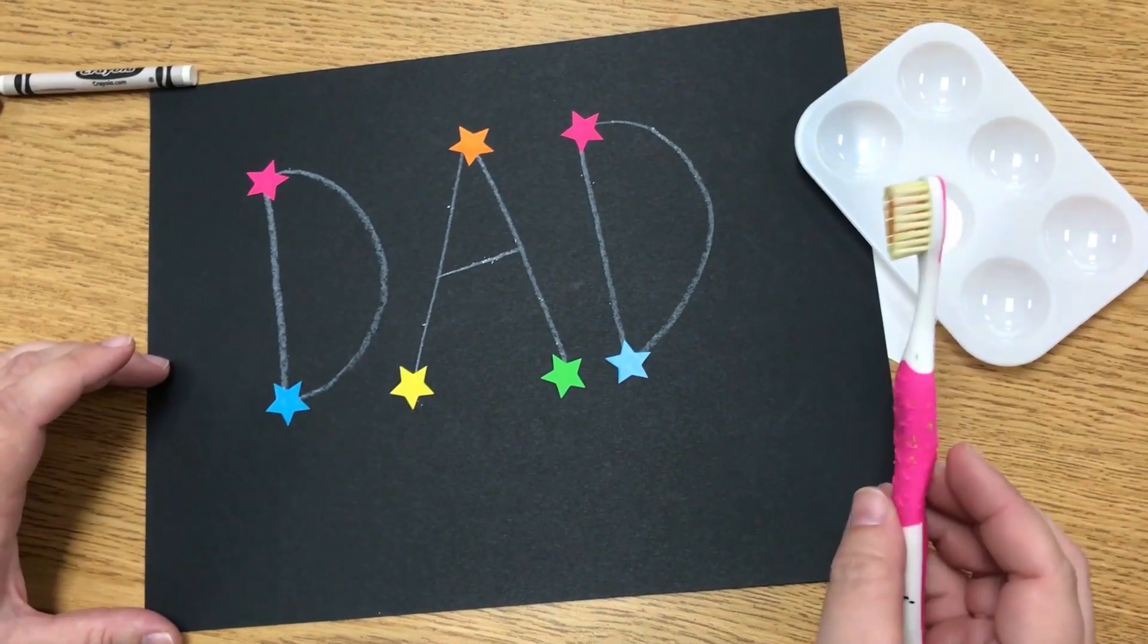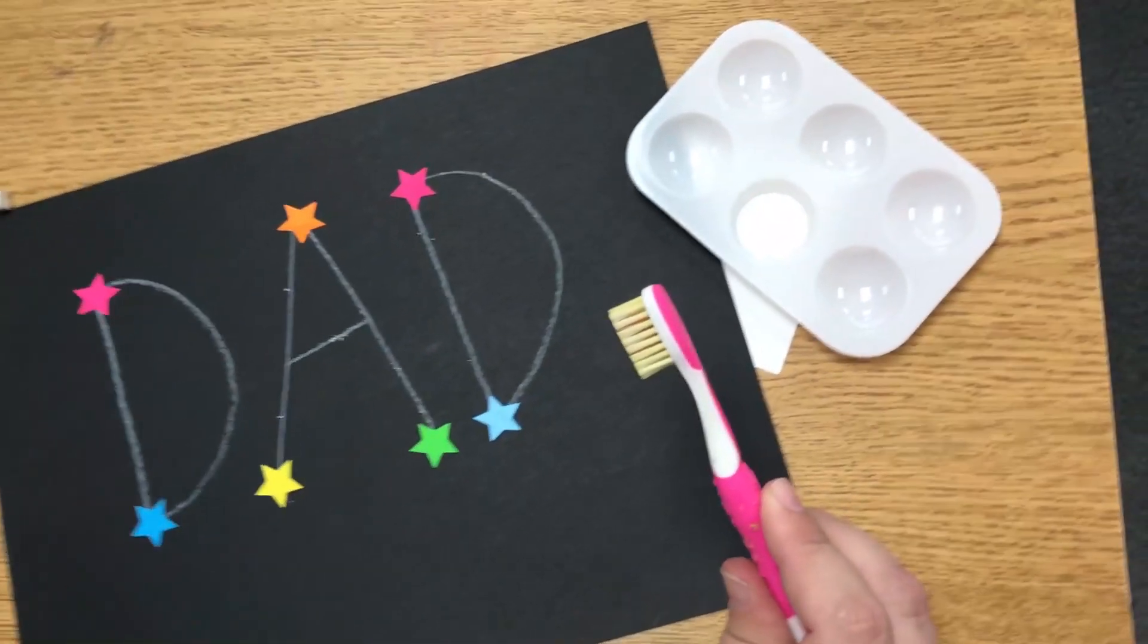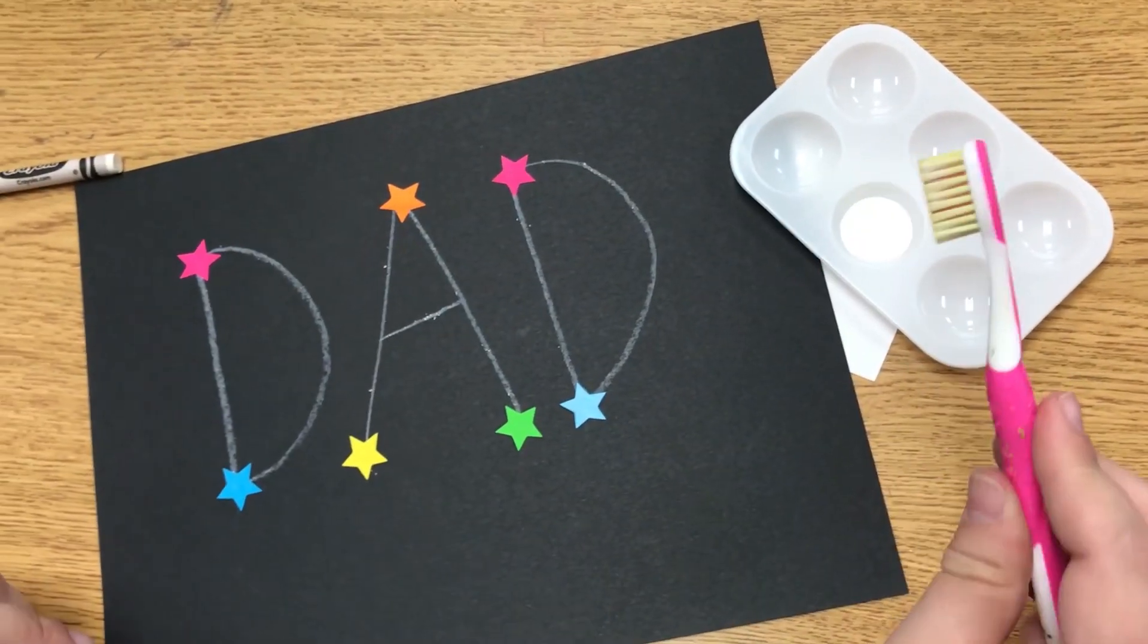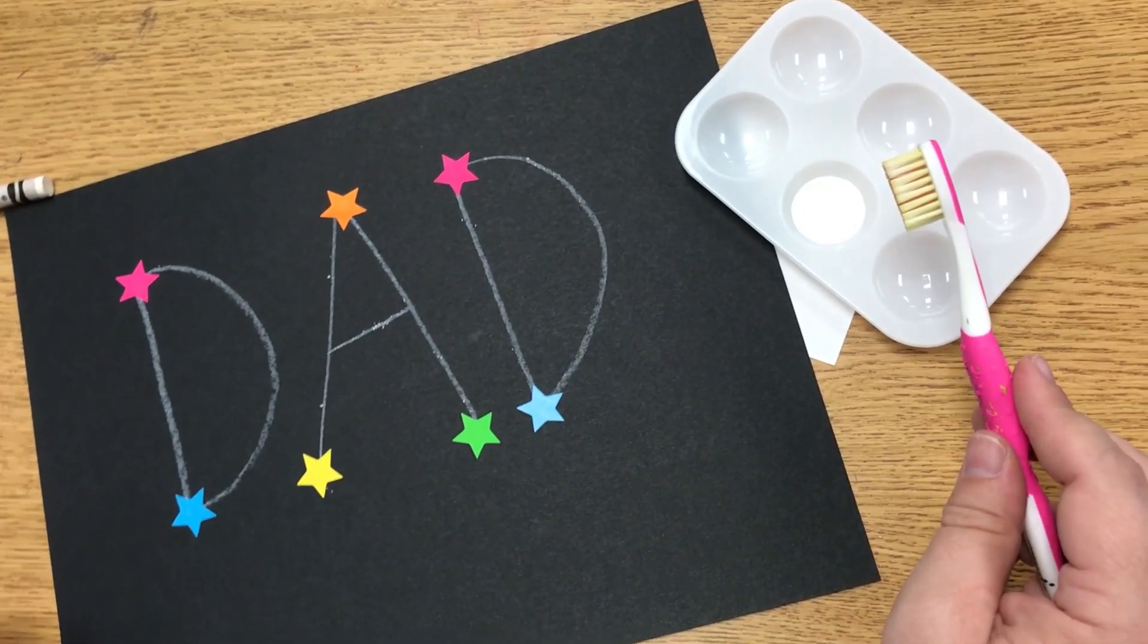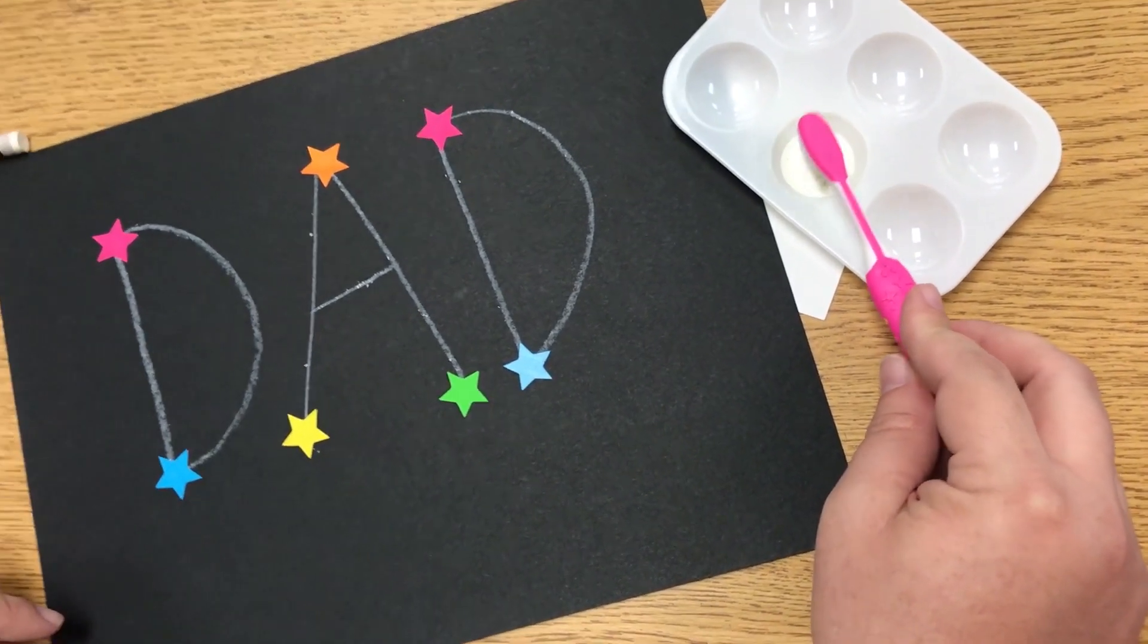I'm going to take an old toothbrush. This is a toothbrush that I just use for painting. I keep it in my bucket with my paint brushes so I know it's not for brushing my teeth. I'm going to use my toothbrush as a painting tool today. I'm going to dip the paint brush into the white paint.